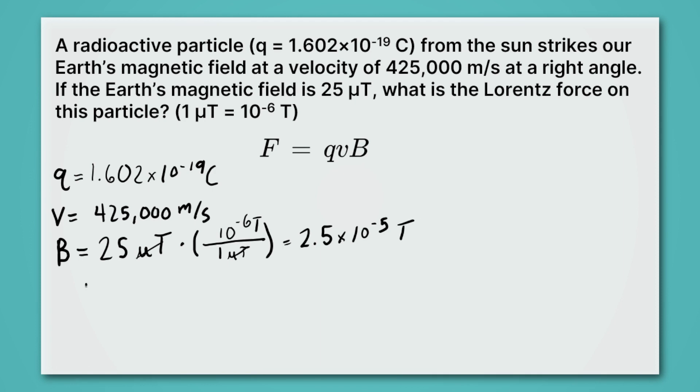All right, great. Now we can actually calculate the force. We're just going to multiply these three things together. First, the charge, 1.602 times 10 to the minus 19 Coulombs, times the velocity, 425,000 meters per second, times the magnetic field, 2.5 times 10 to the minus 5 Teslas. When we multiply all of that together, we're going to get 1.7021 times 10 to the minus 18. All right, now let's round for sig figs. Our magnetic field has just two sig figs, so we should keep just two sig figs here. That means we're going to round to 1.7 times 10 to the minus 18. And then the unit for force here is Newton, so we put a big N there.